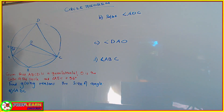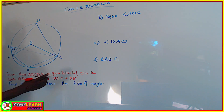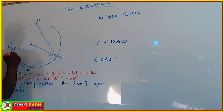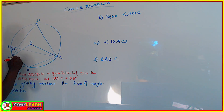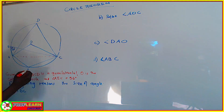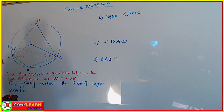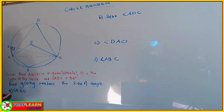We are told that ABCD is a quadrilateral, O is the center of the circle, and angle AEC is 56 degrees. So this angle is 56 degrees. We can draw a line so that chord AC is the one that is subtending this angle of 56 degrees. We are supposed to find different angles and give reasons as to why we have chosen those values.